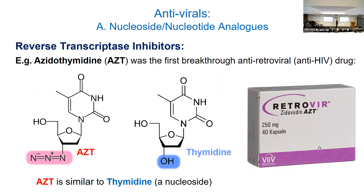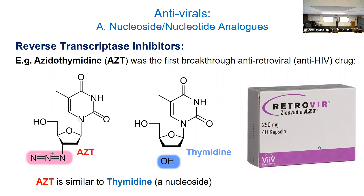AZT (azidothymidine) has side effects, and since then there have been many HIV medications developed — many of them nucleoside analogs. Some have lesser side effects and are better tolerated by digestion. I don't think AZT is very commonly used anymore because there are better ones with fewer side effects. The brand name Retrovir references the fact that HIV is a retrovirus — they're trying to use some words to help recognize what it's used for.